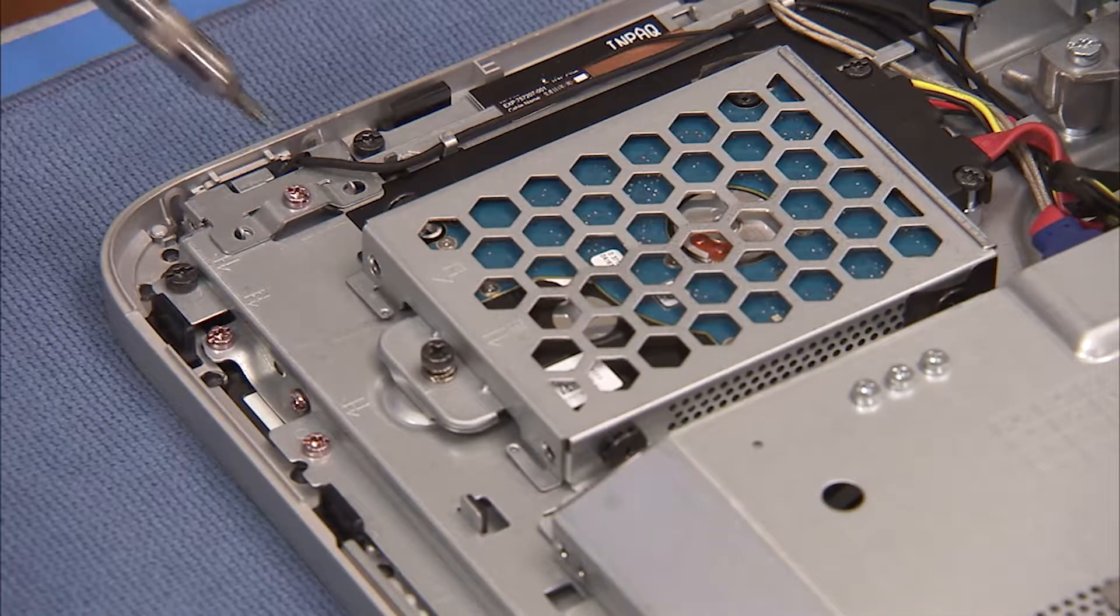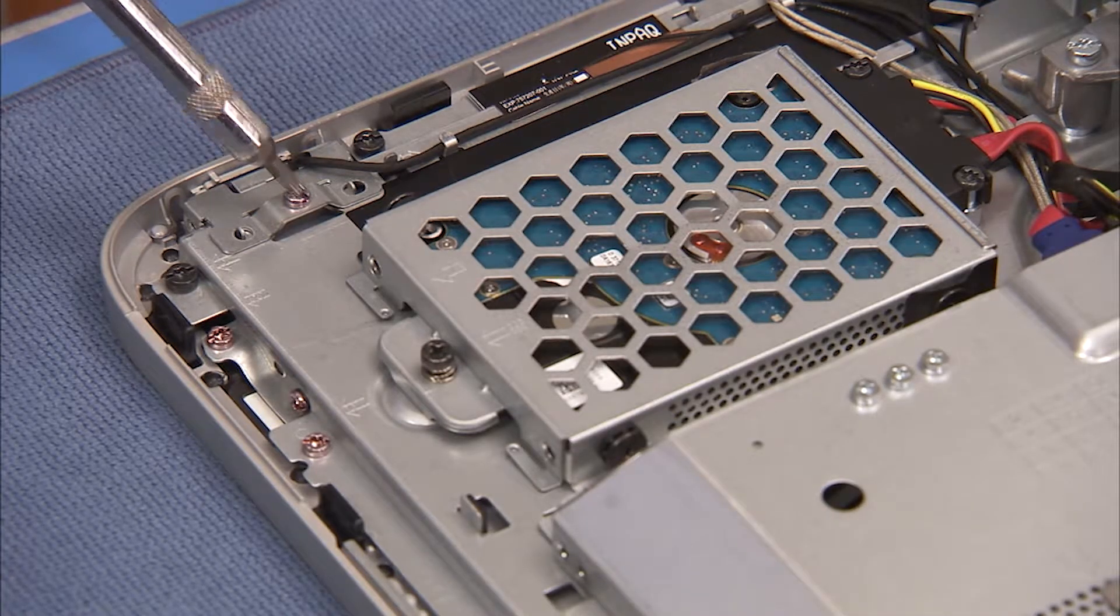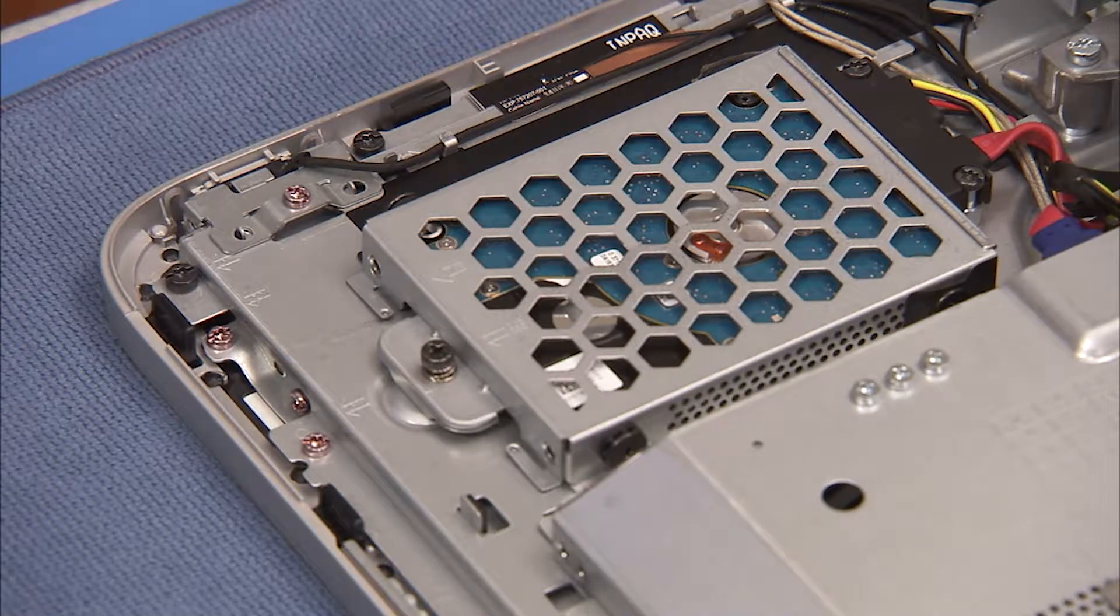Detach the pink Torx head screw that secures the power button board assembly to the middle frame of the PC.